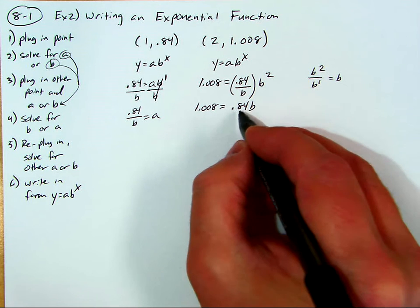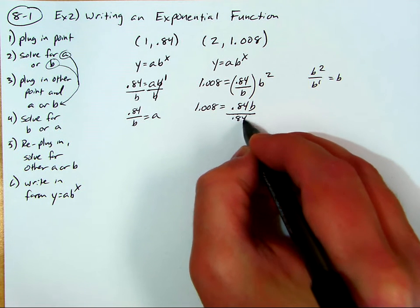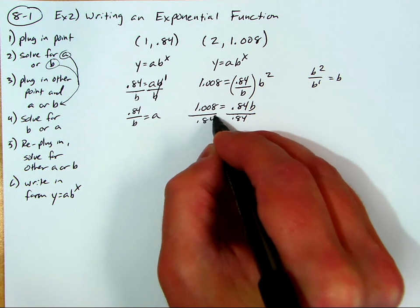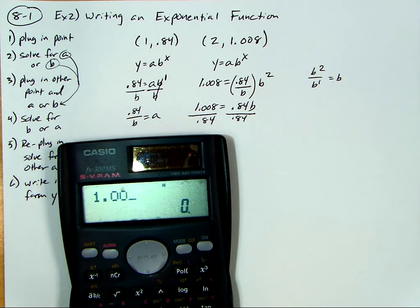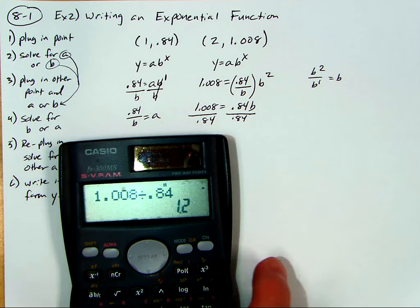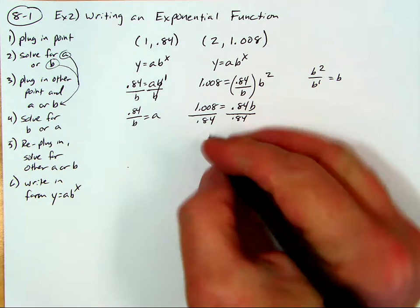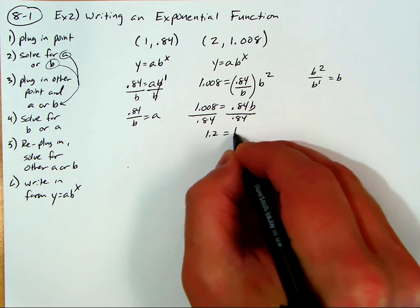We need to solve for b. So divide by 0.84 on both sides. Let's see what this equals. 1.008 divided by 0.84, 1.2. So it looks like b is equal to 1.2.